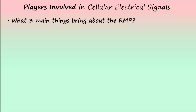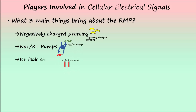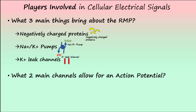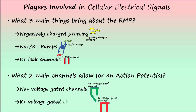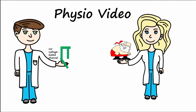In summary, please be able to answer two questions. First, what three main things bring about the resting membrane potential? If you answered negatively charged proteins, sodium-potassium pumps, and potassium leak channels, you are correct. Second, what two main channels allow for an action potential? If you answered sodium voltage-gated channels and potassium voltage-gated channels, you are correct. This concludes part one of the video series on electrophysiology. Please join us for part two as we discuss circumstances that can change the resting membrane potential. Thanks for watching.